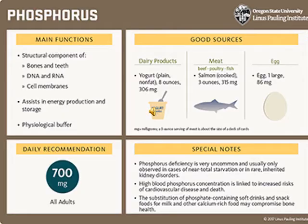Good sources of phosphorus include yogurt, meat, poultry, eggs, and fish.